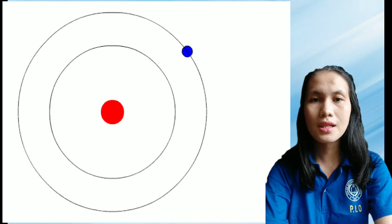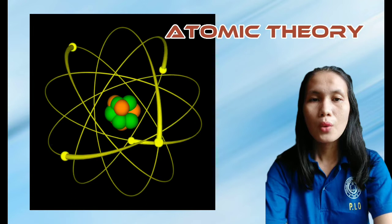The modern model of an atom is based on quantum mechanics. The Bohr model contains some errors, but it is important because it describes most of the acceptable features of atomic theory without all the high-level math of the modern version.